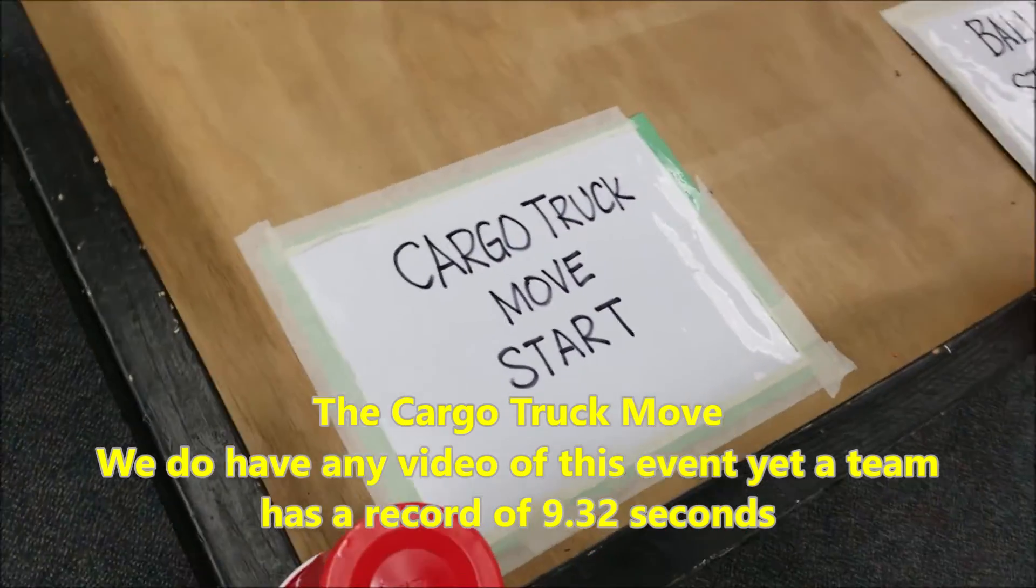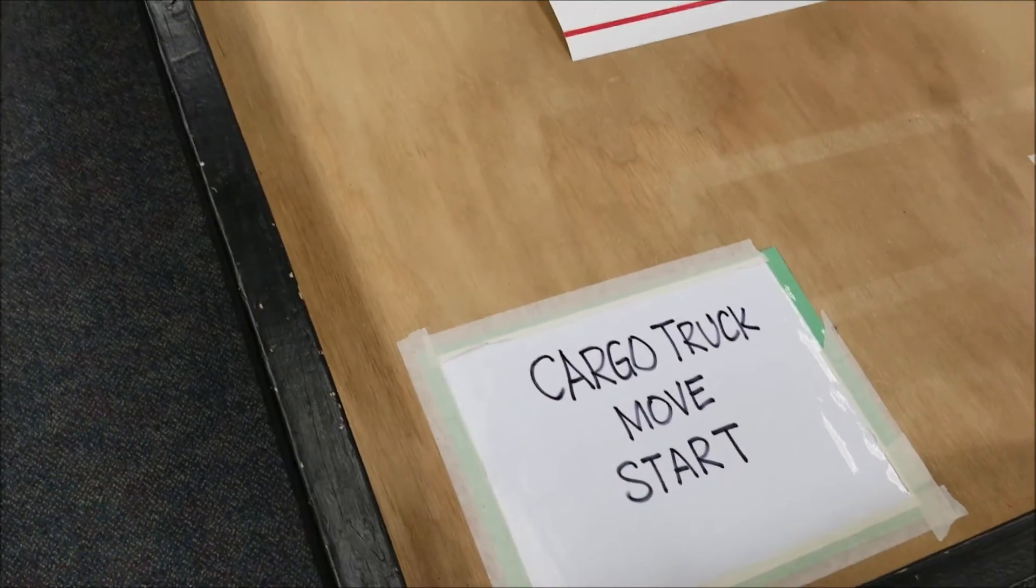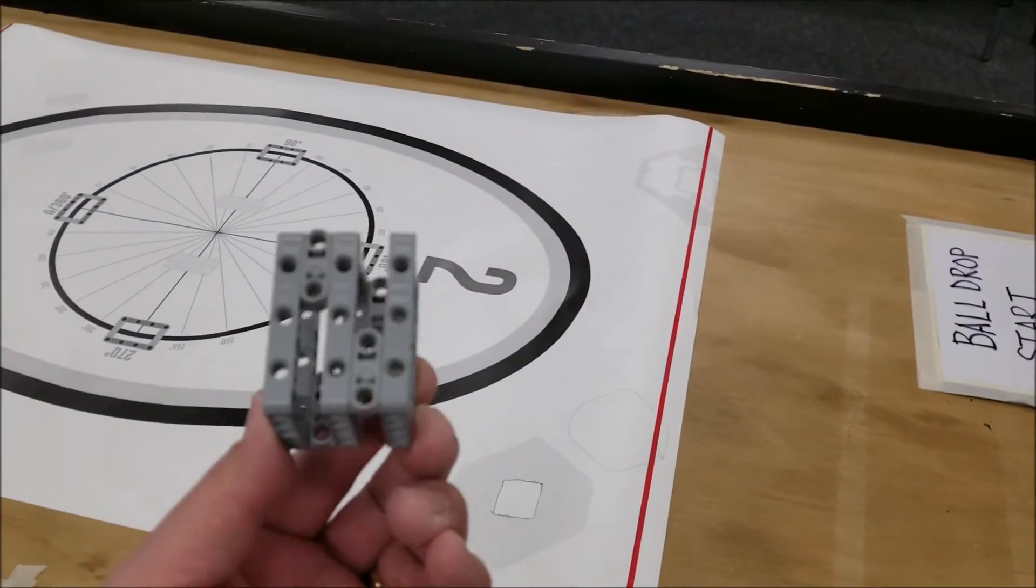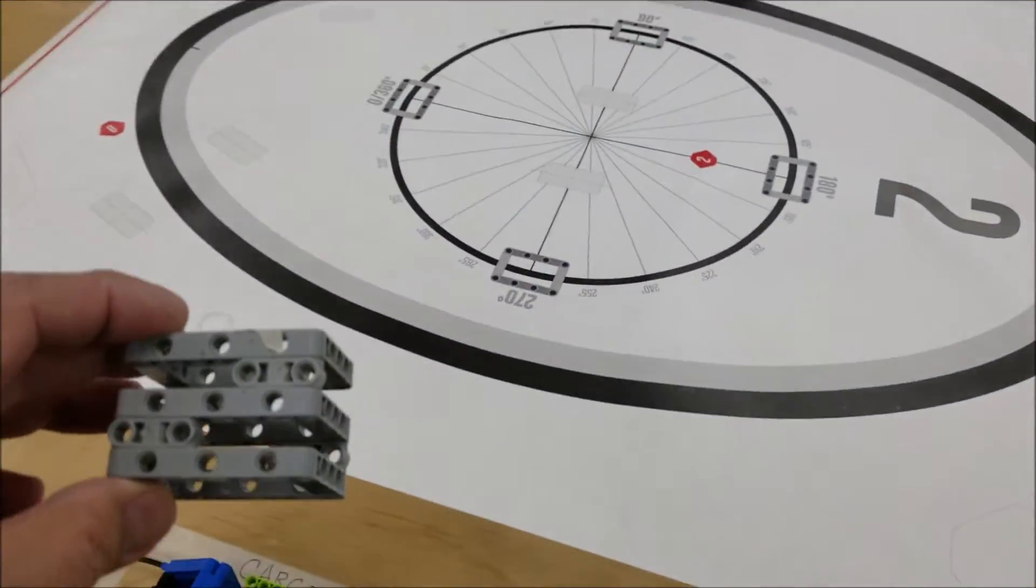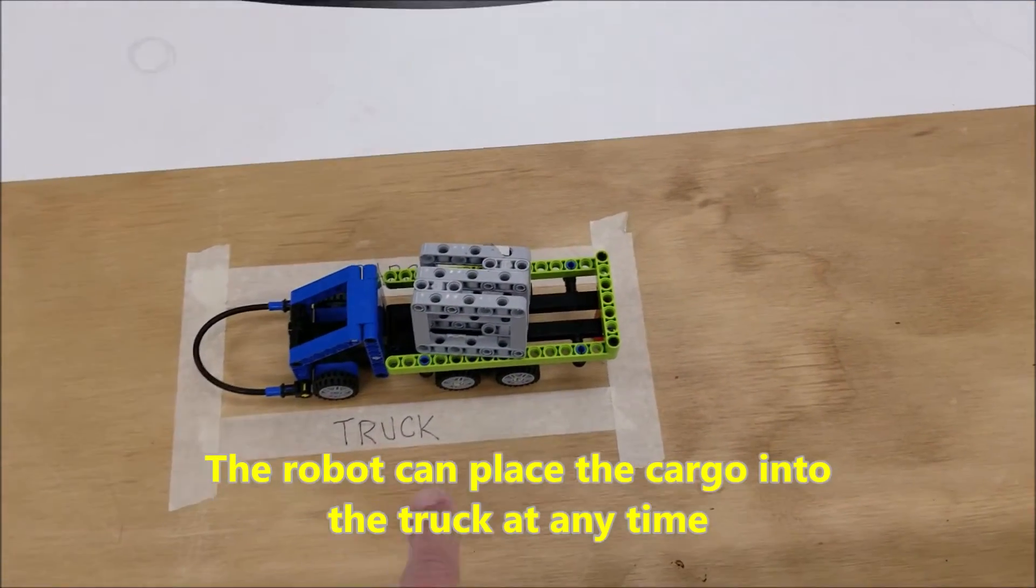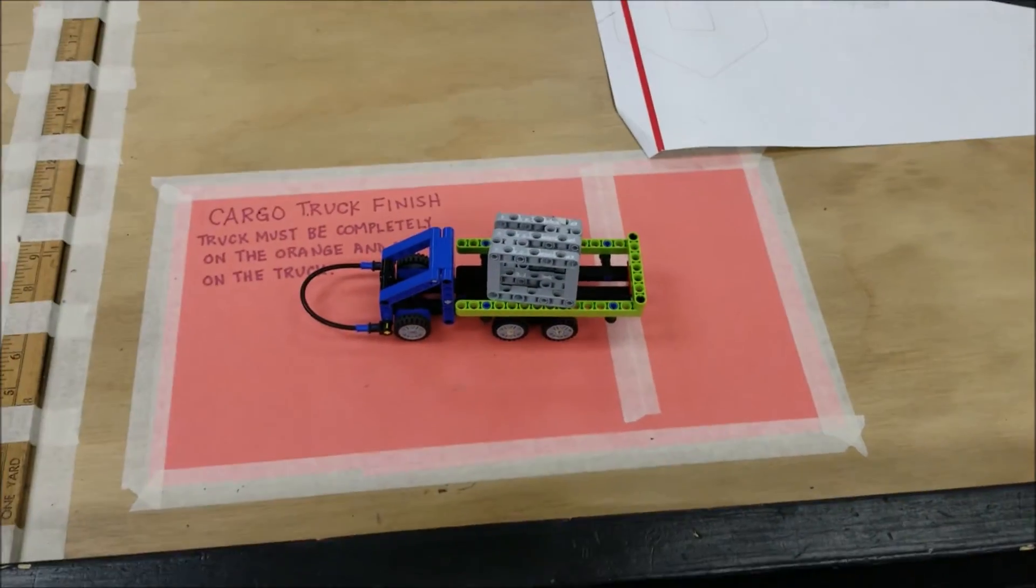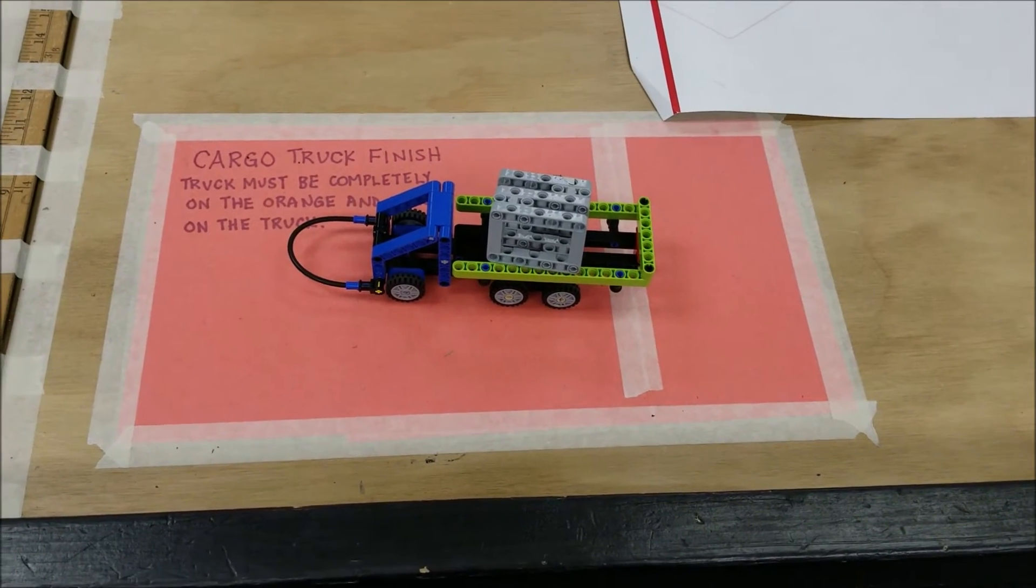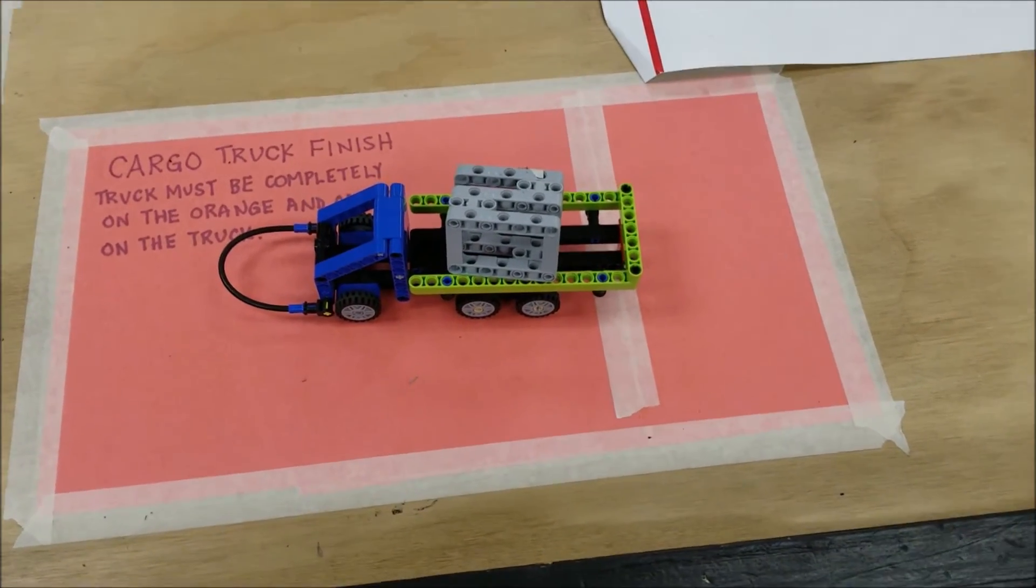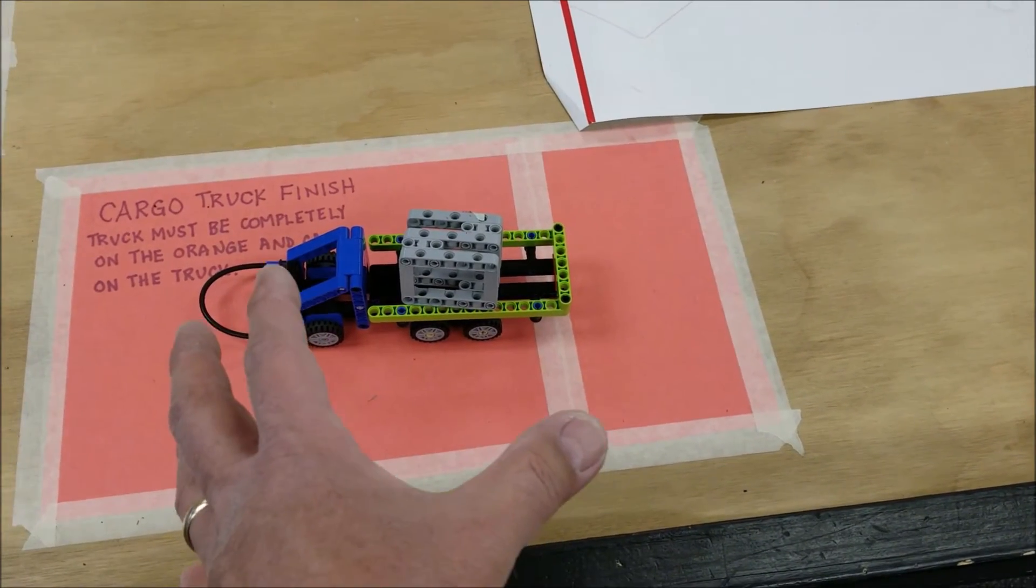Okay, and the last event here is going to be the cargo truck move. Those of you that did cargo connect will see this is pretty similar to what you guys had to do. So the robot will start here. The robot will start with this cargo. The robot must put the cargo into the truck. It doesn't have to be in a particular position. So the truck will be here and then the robot must move the truck right onto that space, the parking lot. So this one will be timed, the quickest team to get the cargo into the truck and move the truck into this space. So the rule is going to be that the truck just has to be completely in this space.